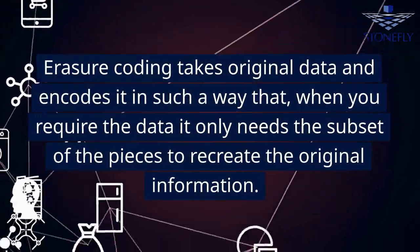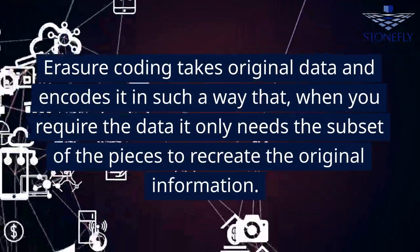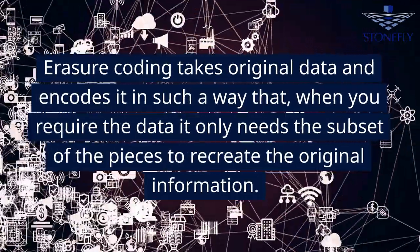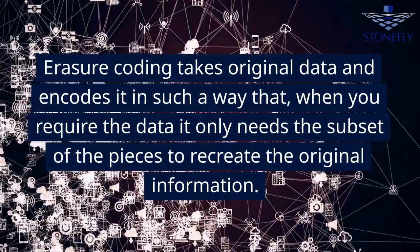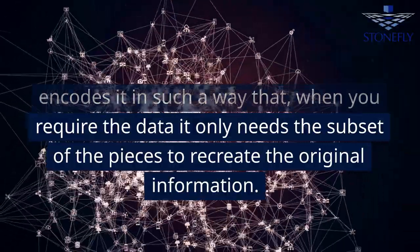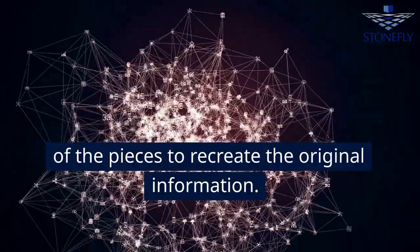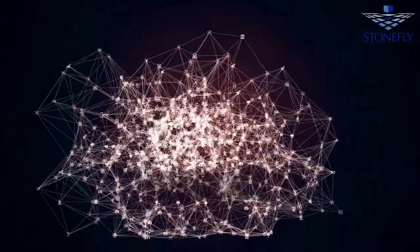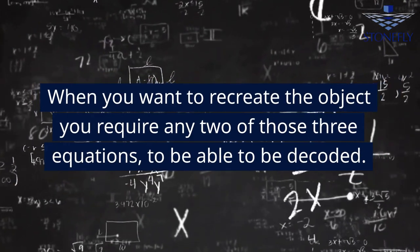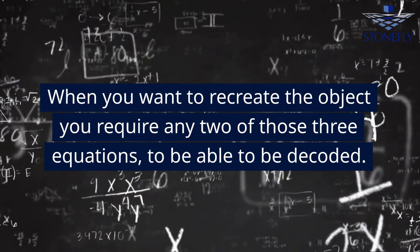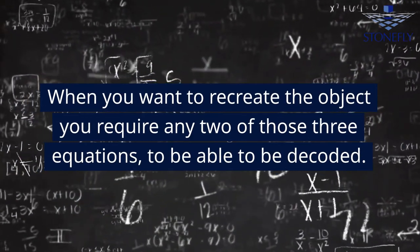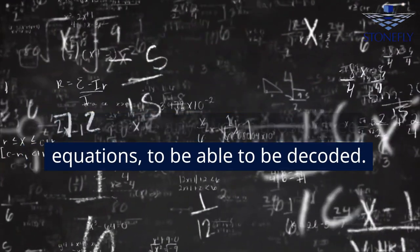Erasure Coding takes original data and encodes it in such a way that when you require the data, it only needs a subset of the pieces to recreate the original information. When you want to recreate the object, you require any two of those three equations to be able to be decoded.